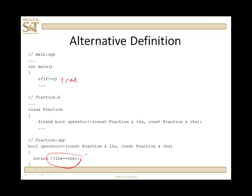All I have to do is return not left-hand side is equals to right-hand side. Because this operator is already defined. And the not equals is exactly not is equals. So, why not go ahead and use the definition that I've already created for the second one. And that's that.